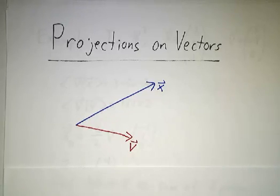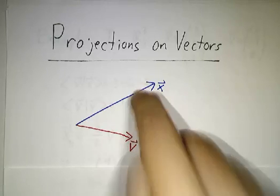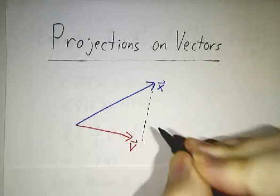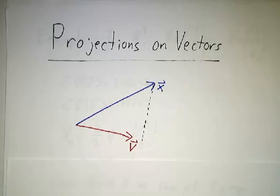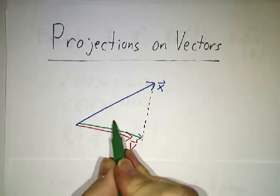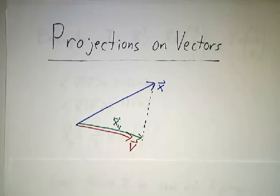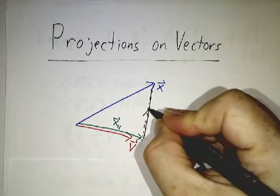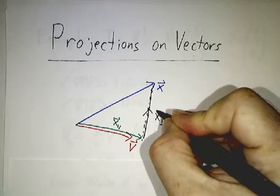So the notion is, let's suppose we have a vector x and we want to break x up into two pieces. We want to break x up into a piece that's in the v-direction, and I'm going to call that piece x-parallel, and a piece that is perpendicular to the v-direction, and I'm going to denote that x-perp.